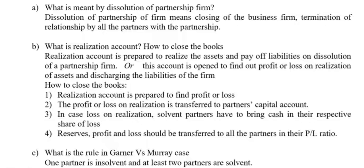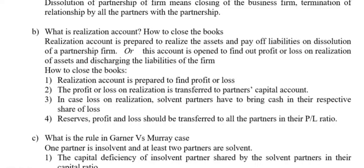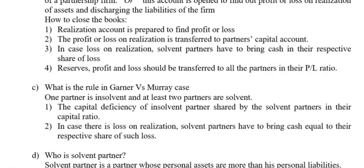Next question: What is the rule in Garner vs. Murray case? In this case, one partner is insolvent and at least two partners are solvent. The capital deficiency of the insolvent partner is shared by the solvent partners in their capital ratio. Second, in case of loss on realization, solvent partners have to bring cash equal to their respective share of such a loss.